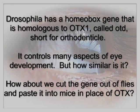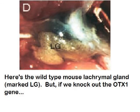Drosophila has a homeobox gene homologous to OTX1 called OTD, short for orthodenticle. It controls many aspects of eye development. What if we cut the gene out of flies and paste it into mice in place of OTX1? Here's the wild-type mouse lacrimal gland. If we knock out the OTX1 gene, there's no more lacrimal gland — this is called an OTX1-minus mutant or knockout.